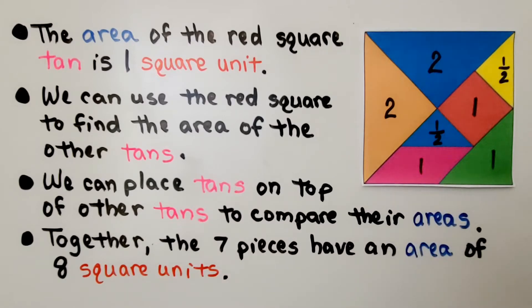We can use the red square to find the area of the other tans. We can place tans on top of other tans to compare their areas.